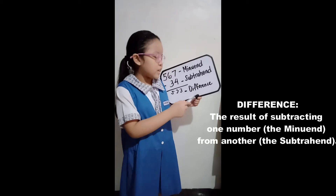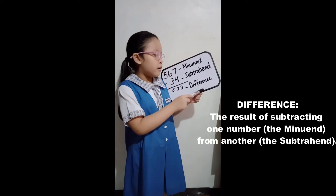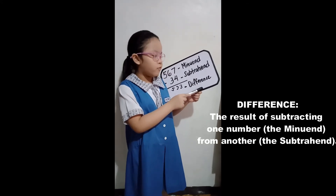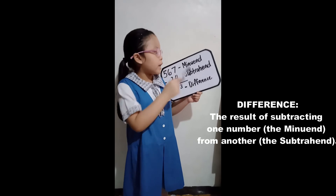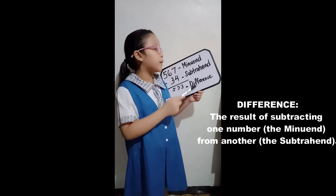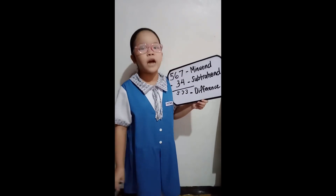533 is the difference. The difference is the result of subtracting the subtrahend from the minuend.